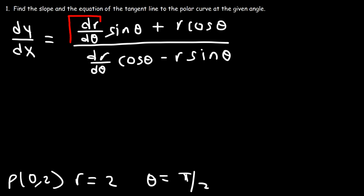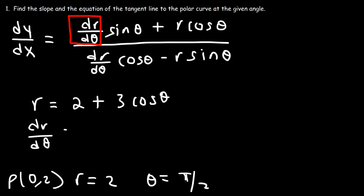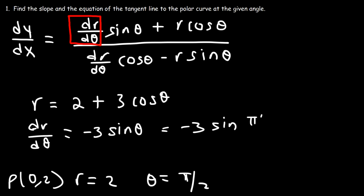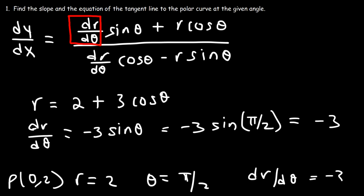The only thing we're missing now is dr/dθ. Recall that r = 2 + 3cos(θ), so dr/dθ = −3sin(θ). At θ = π/2, that's −3·sin(π/2) = −3·1 = −3. So dr/dθ = −3 in this example.